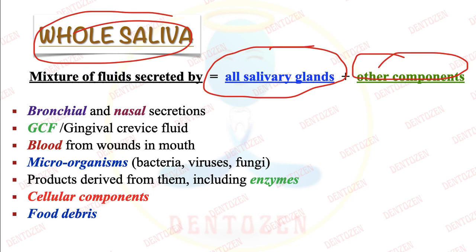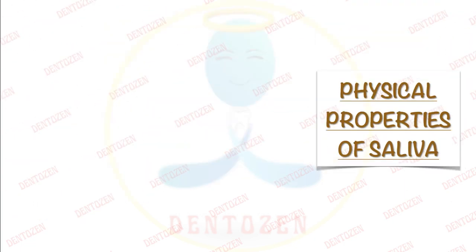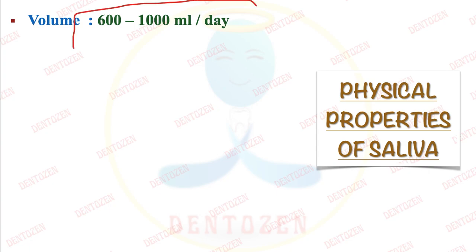All the whole saliva pools in the floor of the mouth. Now let's see the properties of this saliva. Daily production is 600 to 1000 ml — that is your viva question. How much volume of saliva is produced per day? It is about 600 to 1000 ml per day.